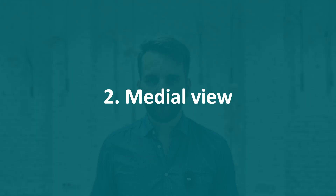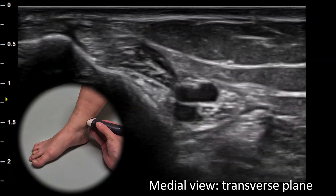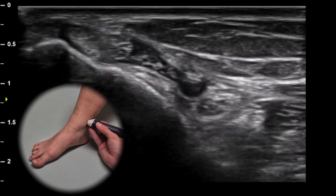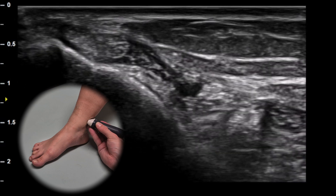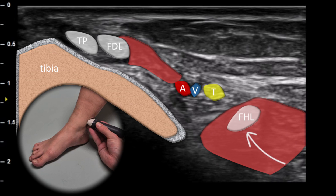Next view is the medial view. When we place the probe posterior to the medial malleolus in the transverse plane, we can evaluate several structures: the tibialis posterior tendon, the flexor digitorum longus tendon and muscle, the posterior tibial artery and vein, the tibial nerve, and the flexor hallucis longus tendon and muscle.